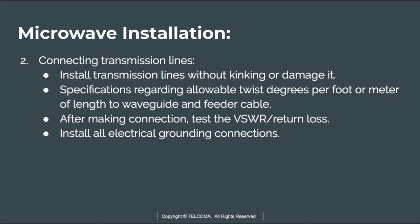The next step is connecting the transmission line. Install the transmission line without damaging it, and read the specification regarding allowable twist degrees per foot or meter for the waveguide and feeder cable. After making connections, test the VSWR (Voltage Standing Wave Ratio) and return loss. Return loss measures the amount of signal reflection along an RF path such as a cable or waveguide — higher return loss means reduced signal strength and possible damage to the RF media.